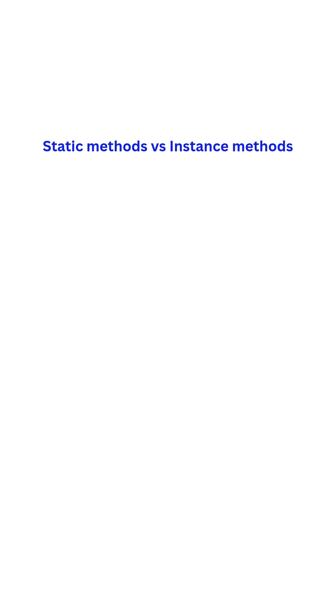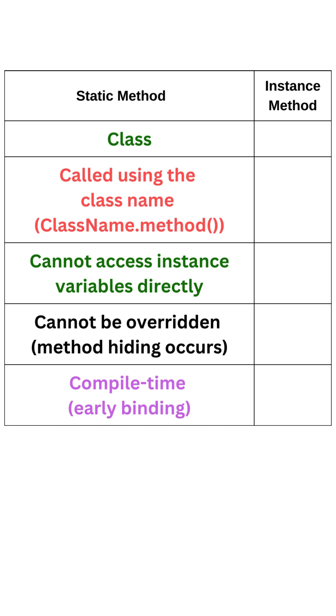Static methods versus instance methods. Static method belongs to the class itself and it is called using the class name, that is, class name.method.